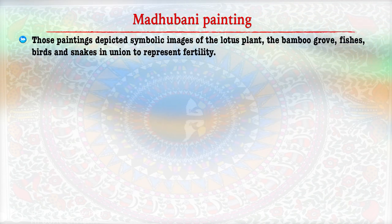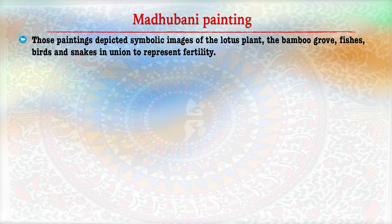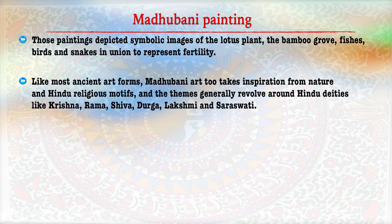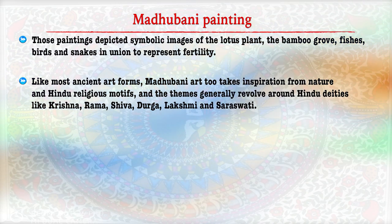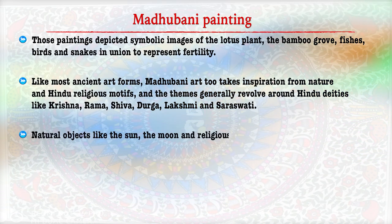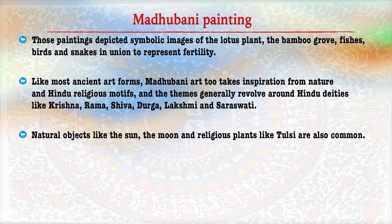These paintings depict symbolic images of the lotus plant, bamboo, fishes, birds, and snakes representing the social environment. Madhubani art takes inspiration from nature and Hindu religious motifs, and the themes generally revolve around Hindu goddesses like Krishna, Rama, Shiva, Durga, Lakshmi, and Saraswati. Natural objects like the sun, the moon, and religious plants like Tulsi are very common in this type of painting.